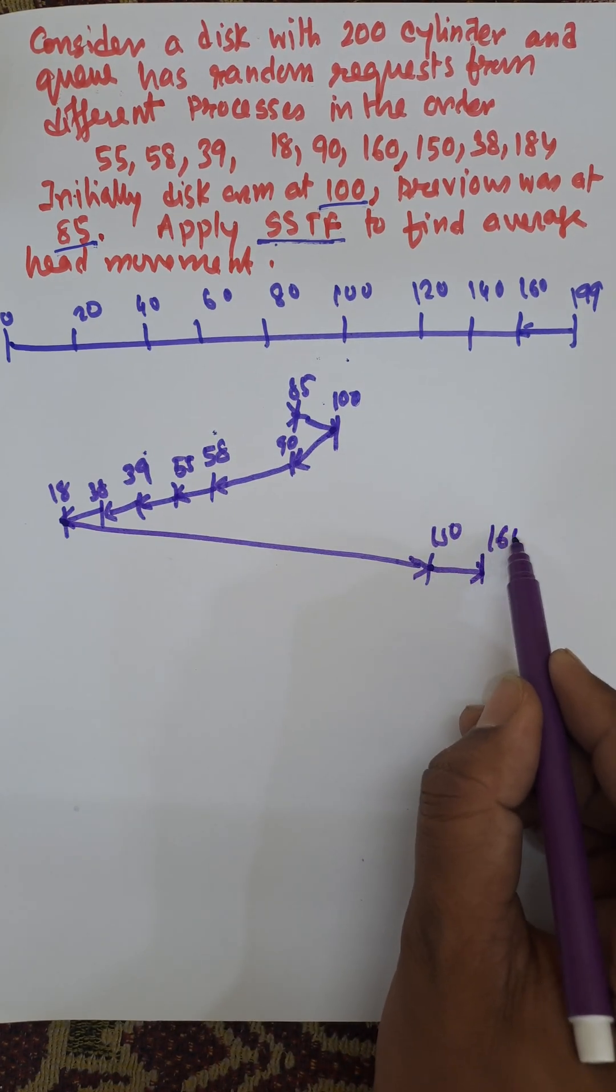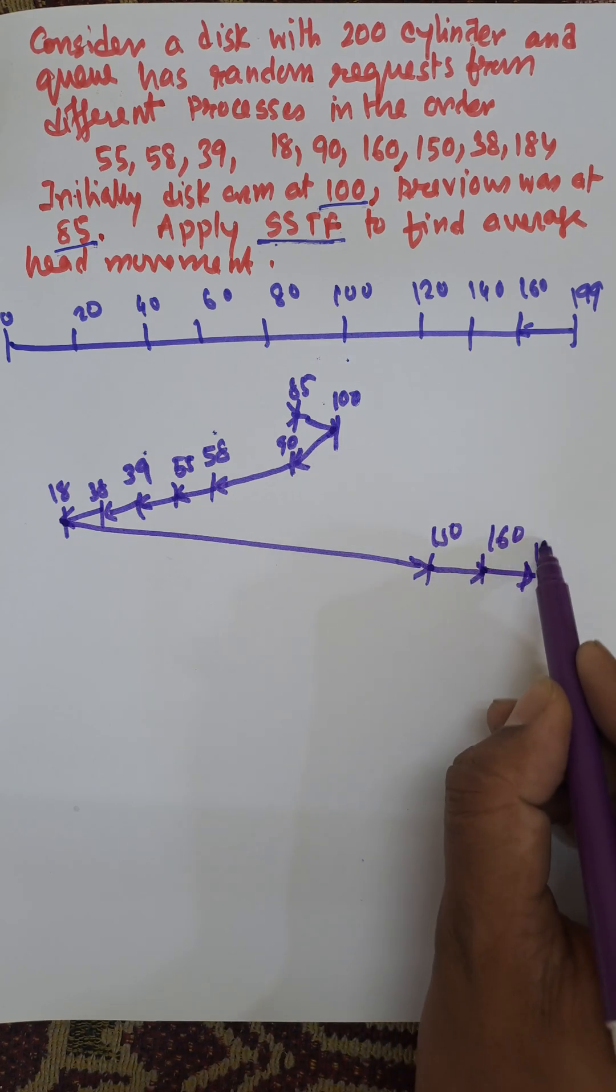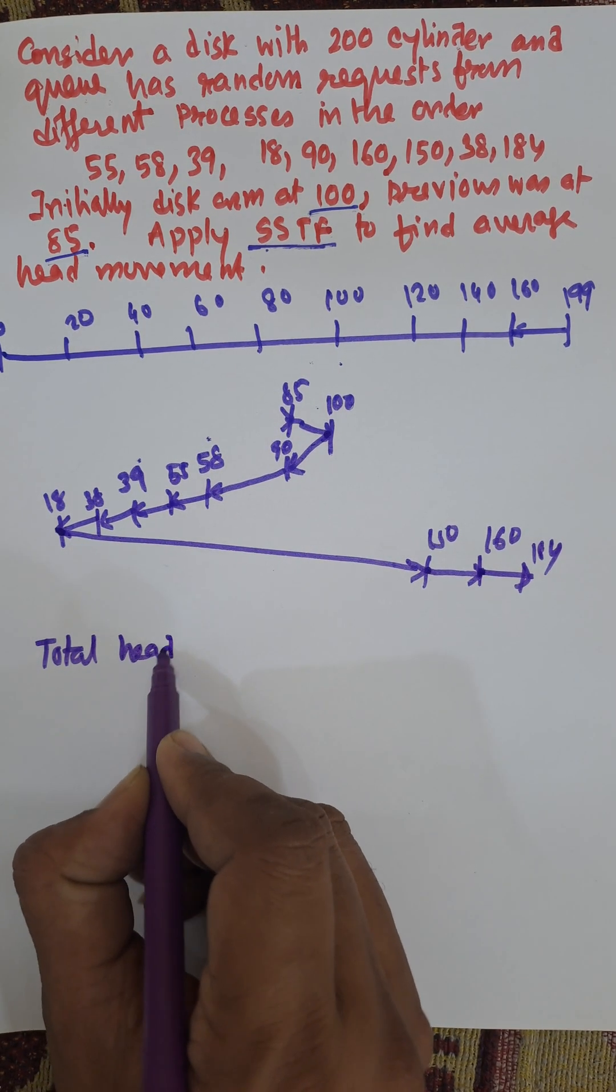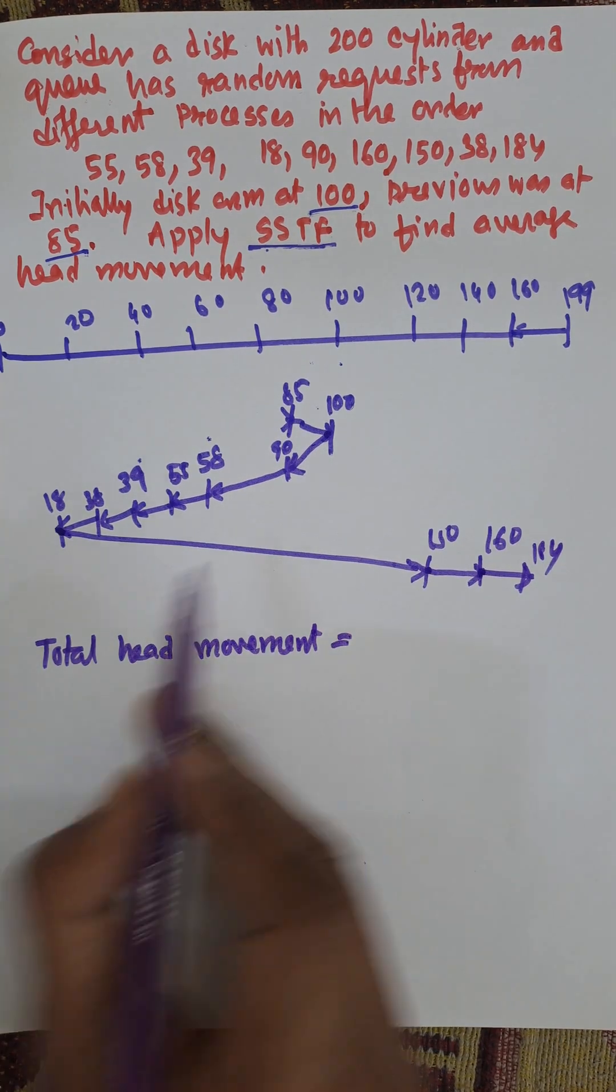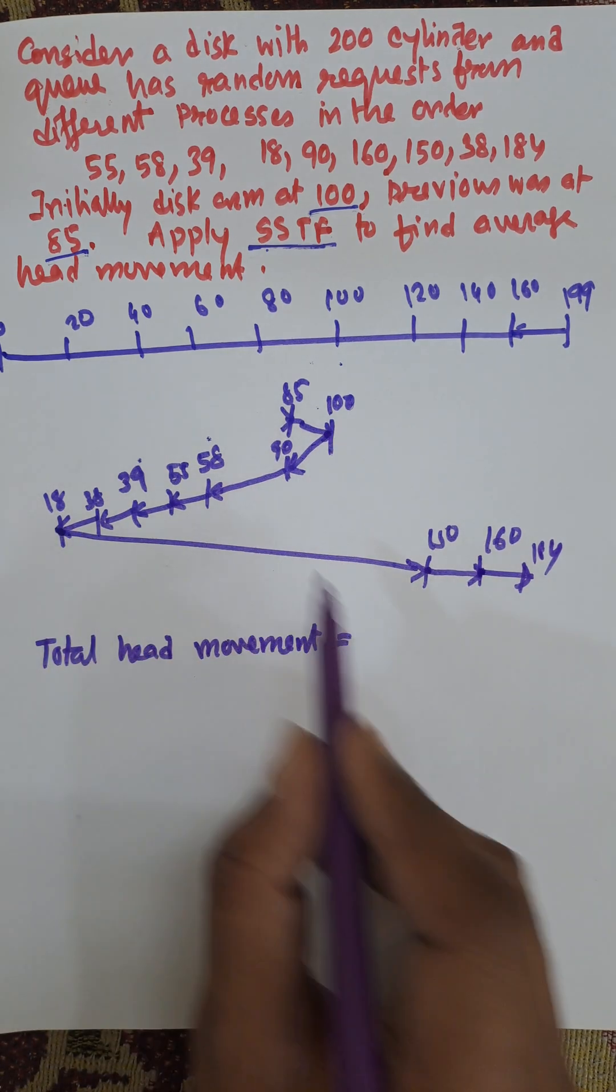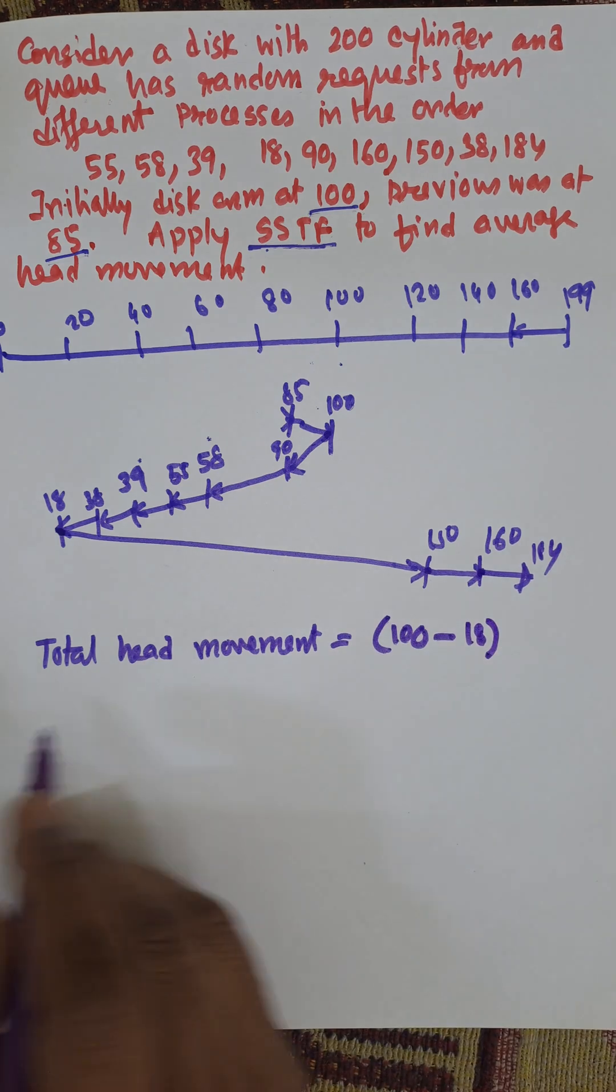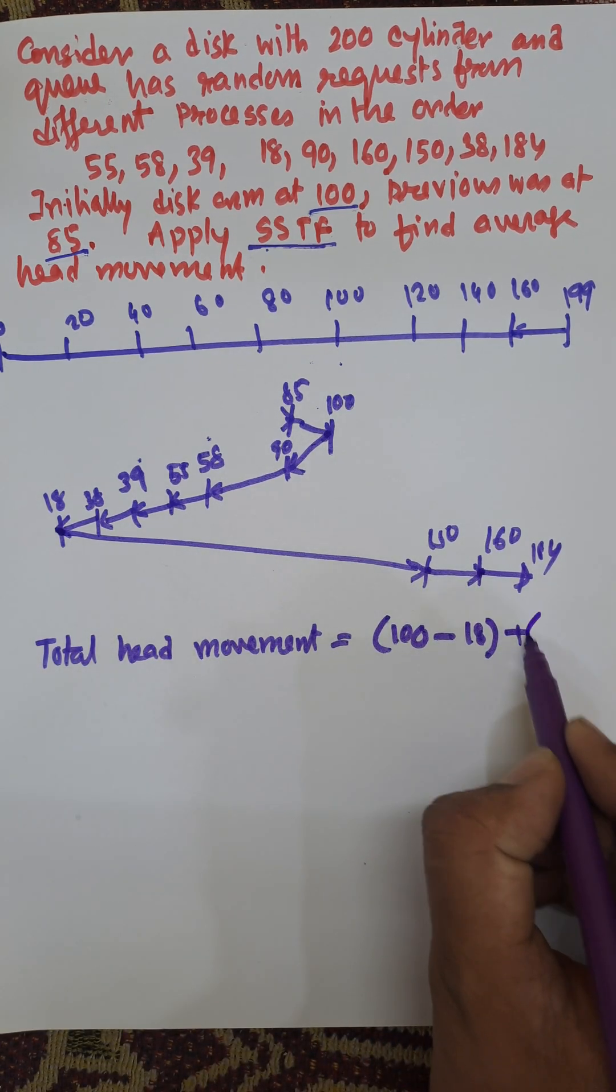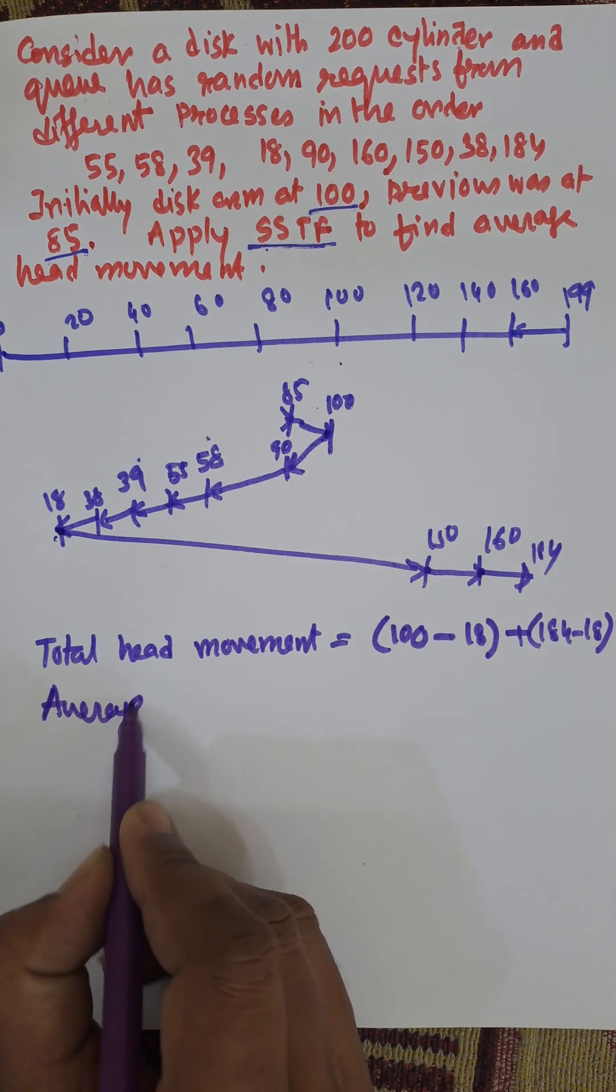Now we need to find total head movement. Total head movement equals: the initial position is 100. As we are moving in the same direction, we need to calculate just 100 minus 18, and then 184 minus 18 is head movement.